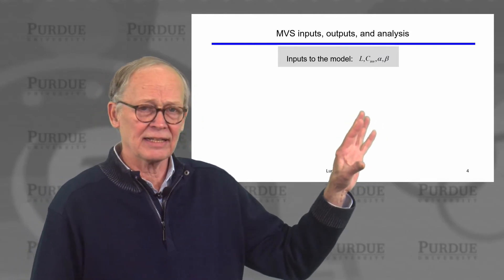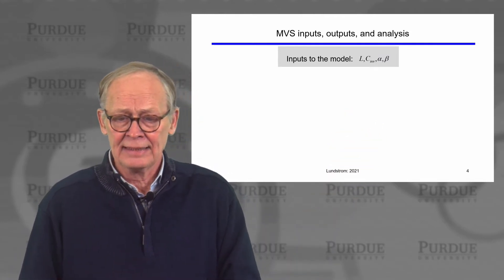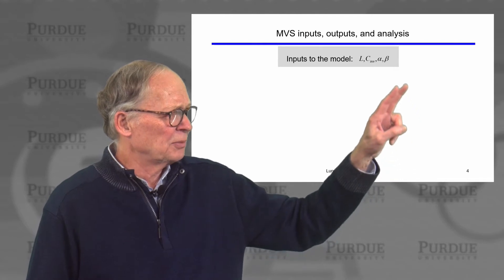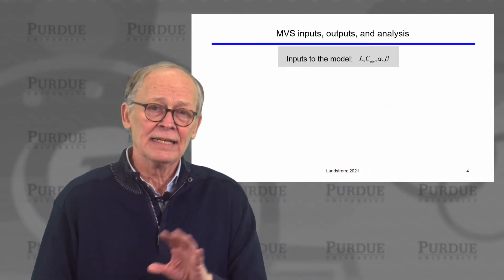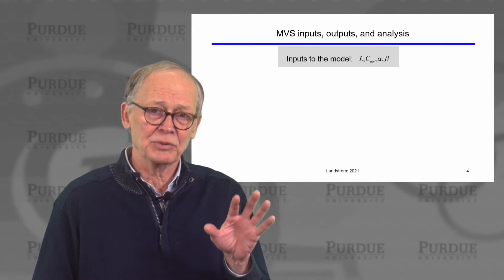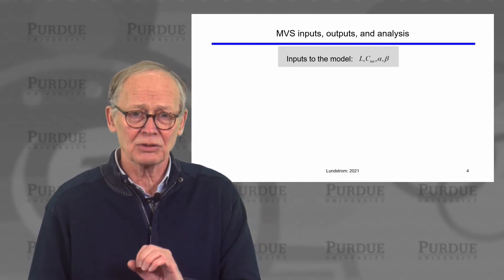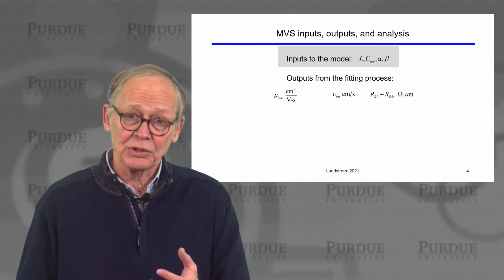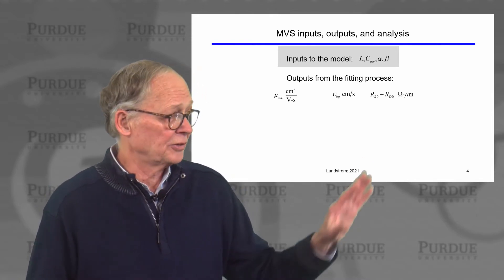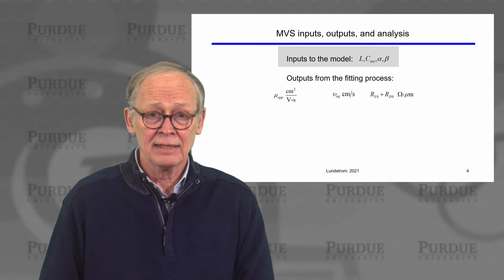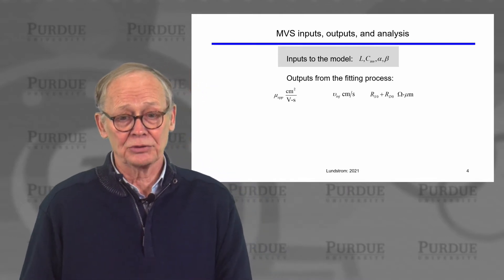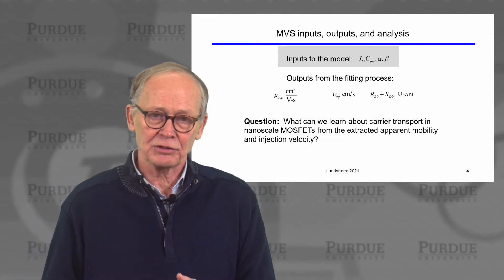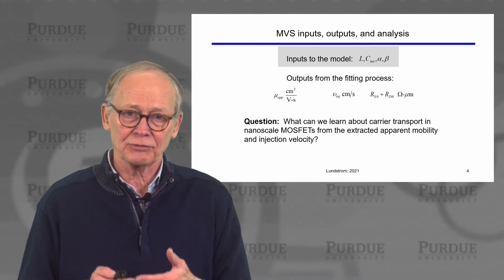The inputs to the MVS model include the channel length, the gate capacitance under strong inversion conditions, and empirical parameters alpha and beta — these are in the model for the charge to smoothly fit sub-threshold to above threshold, and they don't change a lot from transistor to transistor. The key outputs from the fitting process are the apparent mobility, the injection velocity, and the series resistance. The question for this lecture is: what can we learn about carrier transport from these extracted parameters?